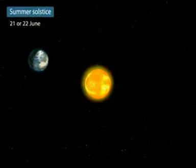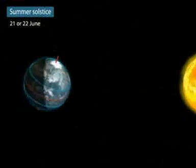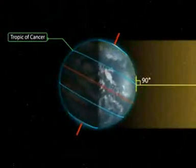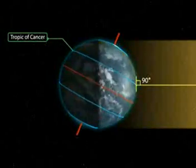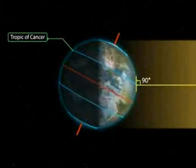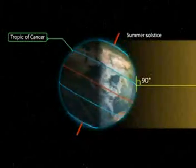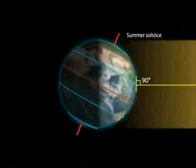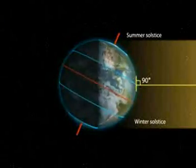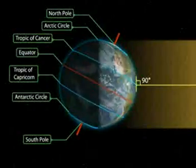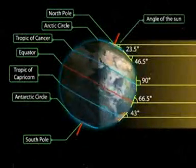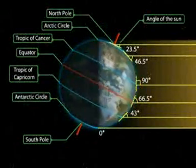Summer Solstice — On the 21st or 22nd of June, the overhead sun is over the Tropic of Cancer. It receives the largest amount of solar radiation. At this time, the northern hemisphere is in the summer solstice, while the southern hemisphere is in the winter solstice. The angle of the sun decreases towards the poles.